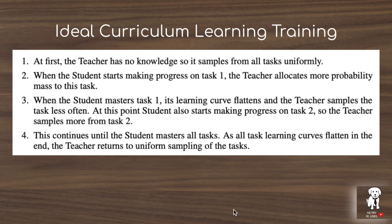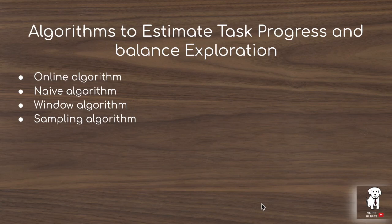The researchers describe an ideal curriculum learning setting with no catastrophic forgetting. At first the teacher has no knowledge, so it samples all tasks uniformly. The student naturally starts making progress on the easiest task first, so the teacher allocates more probability to it, then once that learning saturates it moves to task 2, and so on. However, in the real-world setting, the teacher must model noisy reward signals, account for forgetting, and balance exploration and exploitation across all tasks it selects between.